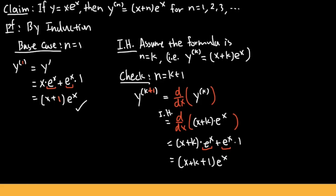As you can see, for the (k+1)th derivative we simply plug in k+1 for n, and based on the inductive hypothesis we worked out the form (x plus k plus 1) times e to the x — which is exactly what you get by substituting k+1 into the formula. This also checks out. With that, we've completed our mathematical induction proof.